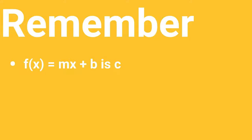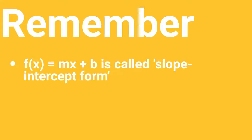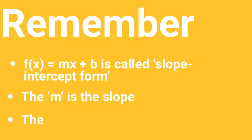From today, remember: f of x equals mx plus b is called slope-intercept form. The m is the slope of the line, and the b is the y-intercept of the line.